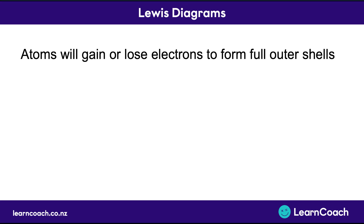Welcome to this video on Lewis diagrams. Lewis diagrams are where we draw the actual outer electrons that form bonds. The key thing underlying all of this is that atoms gain or lose electrons in order to form full outer shells, which makes them stable.